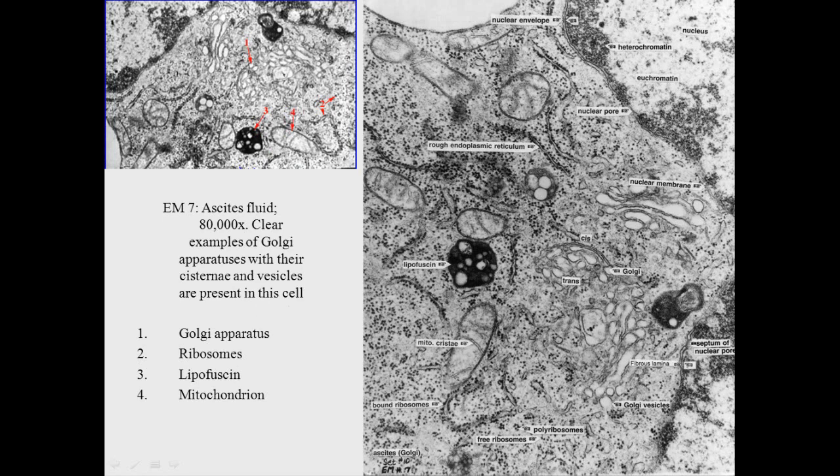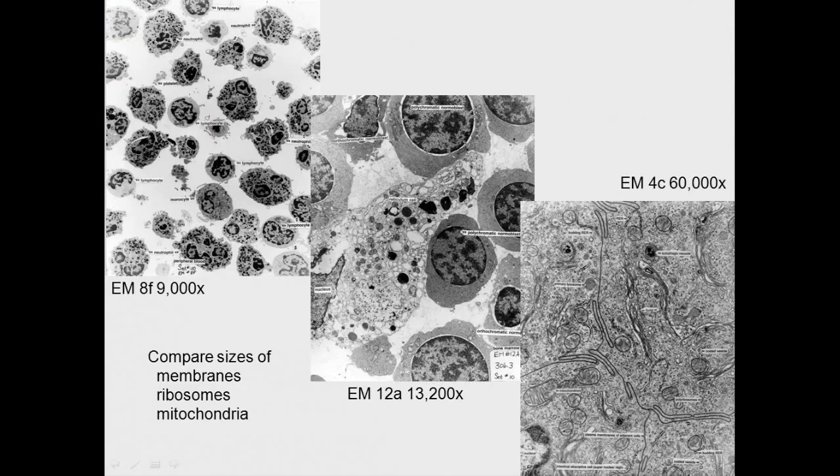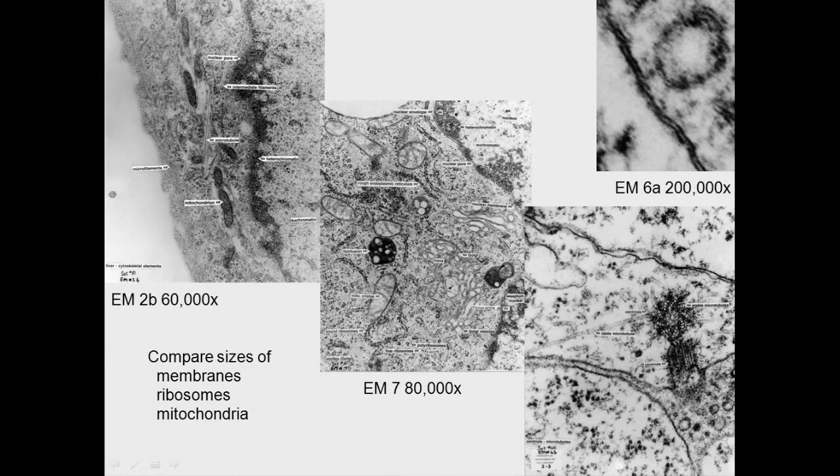And so if we want to look at ribosomes, look at rough endoplasmic reticulum. You can get a feel for what the size of the ribosome is. And then finally in higher magnification, you can see the lipid bilayer as well. So here we can see the magnification 9,000, 13,000, 60,000, all the way up to 200,000 magnification.